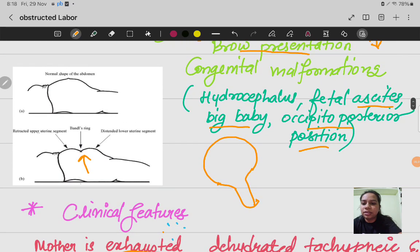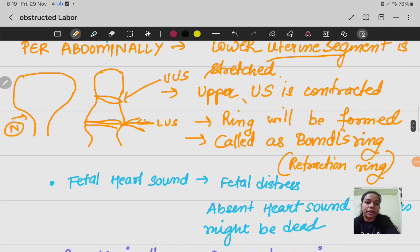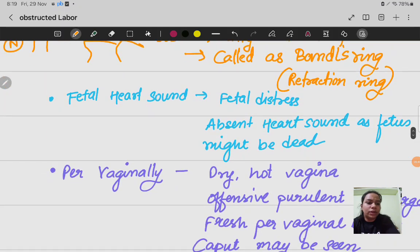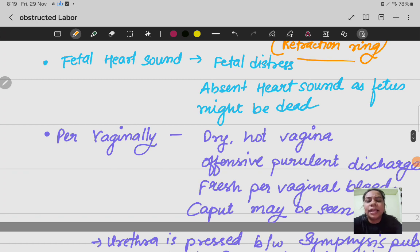This ring is called the Bandl's ring. This is the distended lower uterine segment and retracted upper uterine segment in the picture. This is also called the retraction ring.